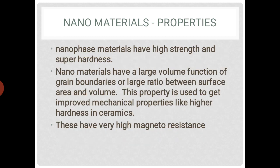Nanomaterials have high strength and super hardness. They have a large volume fraction of grain boundaries and a large ratio between surface area and volume, which improves mechanical properties. For example, ceramics have high hardness and very high magnetoresistance.